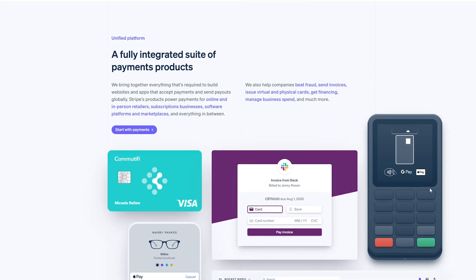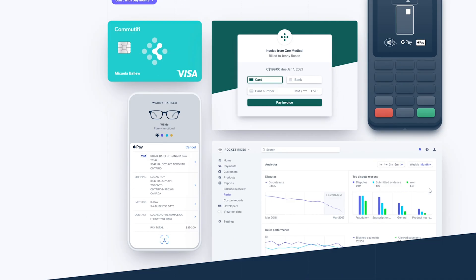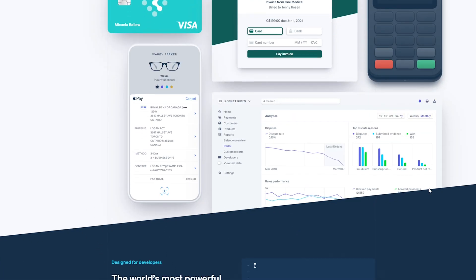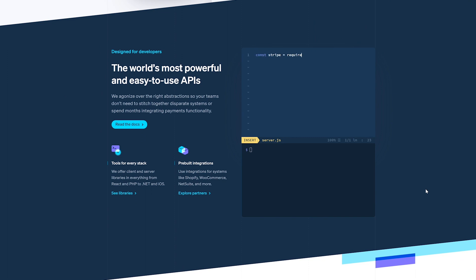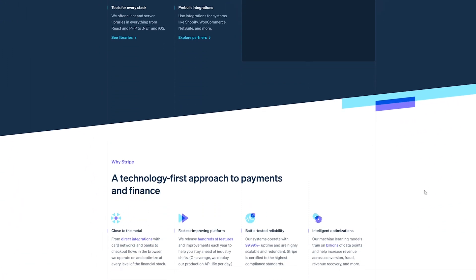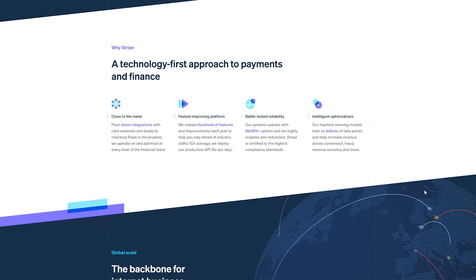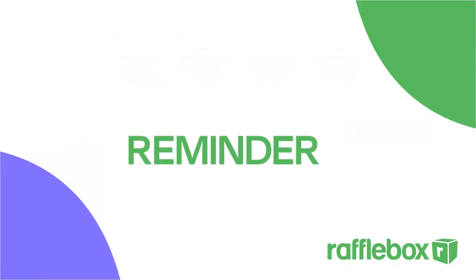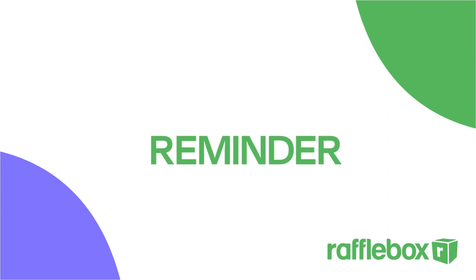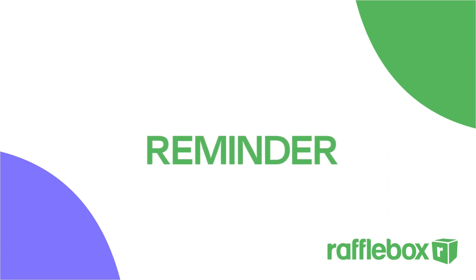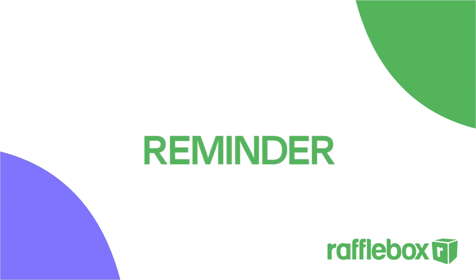All groups running a raffle with Rafflebox are required to set up a Stripe account. There's no fee to set up this account. Every dollar raised for your fundraiser is deposited into a secure account only you can access. Stripe fees or credit card transaction fees will be deducted directly at the time of ticket purchase. Rafflebox does not have access to the funds in your Stripe account. At the end of your raffle, you will receive a separate invoice from Rafflebox for the platform fee.